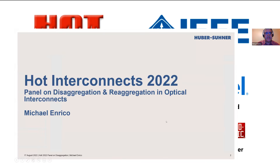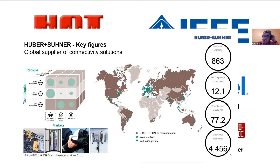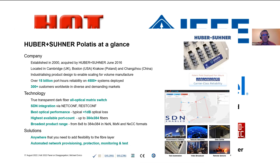Okay, can you see that? Yes. So, a few words on Huber and Suhner — it's a Swiss multinational headquartered in Switzerland, working in three technologies: radio frequency, fiber optics, and low frequency power connectors, across three market segments: communications, transportation, and industrial. Pilatus sits squarely in the largest part of the business — fiber optics and communications.